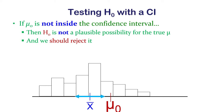We don't know for sure, of course — it's just a sample, there are probabilities not certainties. But we say it's not plausible. Given our data, we reject this null hypothesis — we don't think that's where our sample came from.